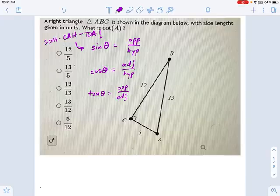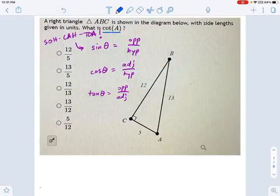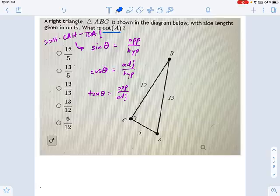In this problem, we're asked for the cotangent of A. The cotangent of A is a trig ratio, it's a special trig ratio you should know it already.